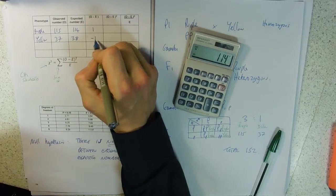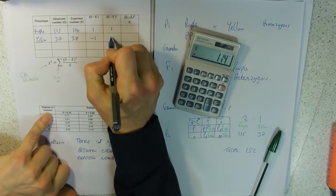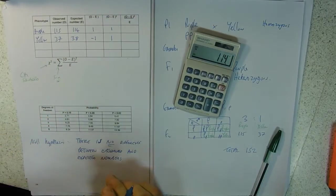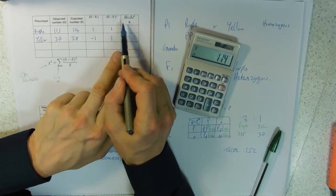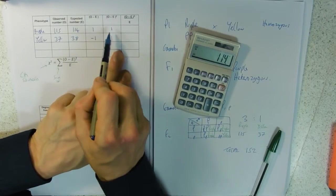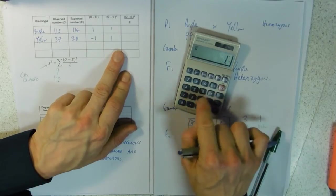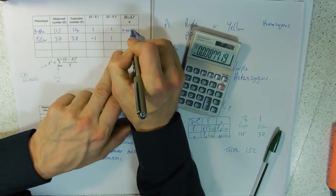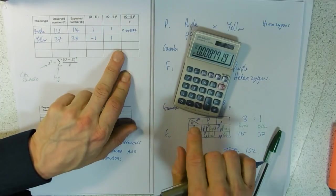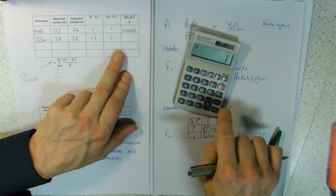O minus E squared - this gets rid of any minuses. That's one and that's one, so minus one times minus one is one. O minus E squared divided by E: 1 divided by 114 is 0.00877.